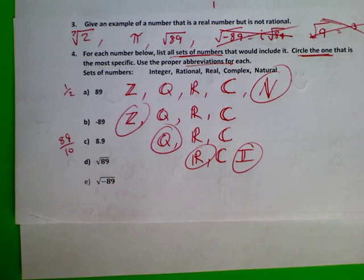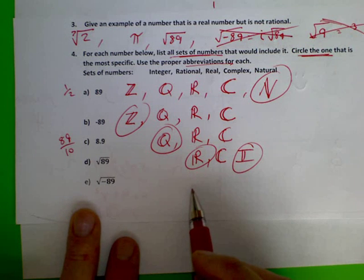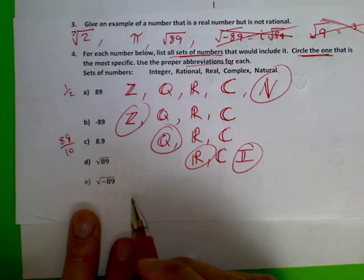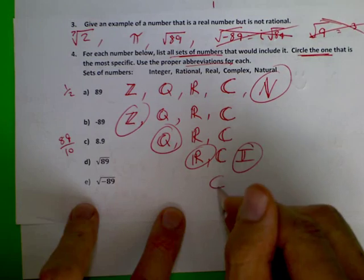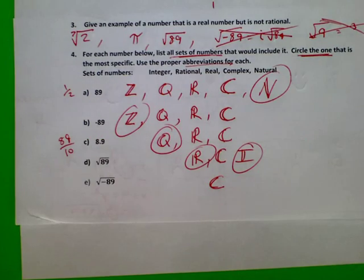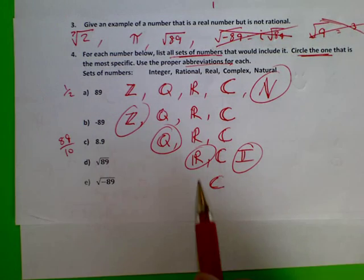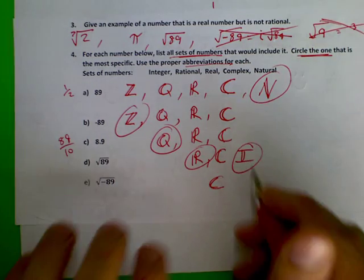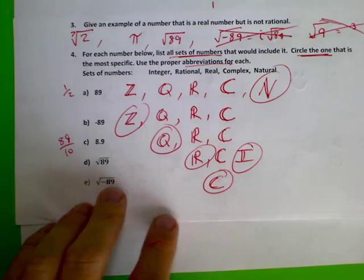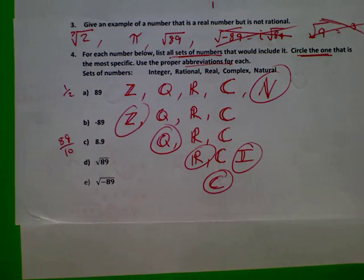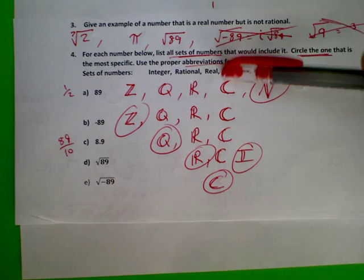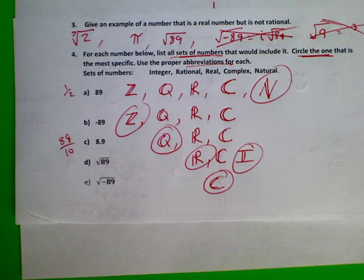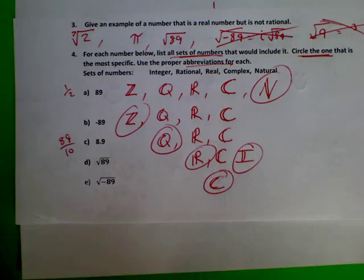What about the square root of negative 89? It's not real, not rational, not an integer, not a natural number — just complex. Is it irrational? No — an irrational number has to be real. This is not irrational. It would be a complex number, or more specifically an imaginary number. The best name out of these categories is complex, and that is in fact the only one of these five categories this number fits into.